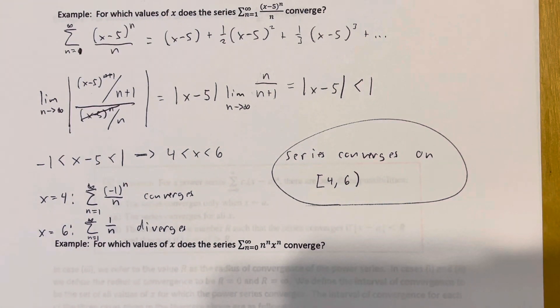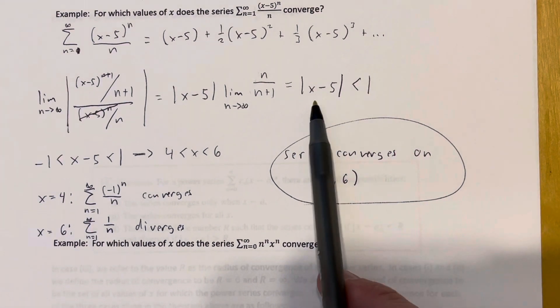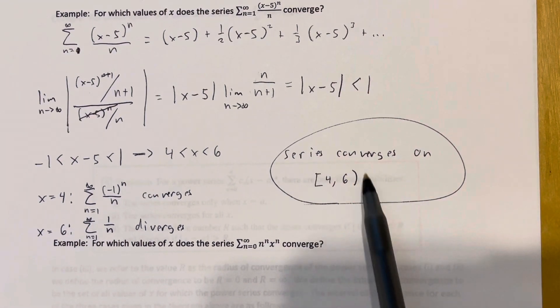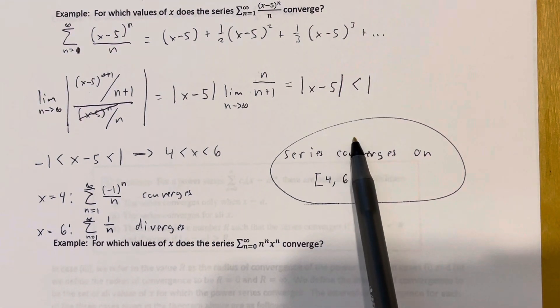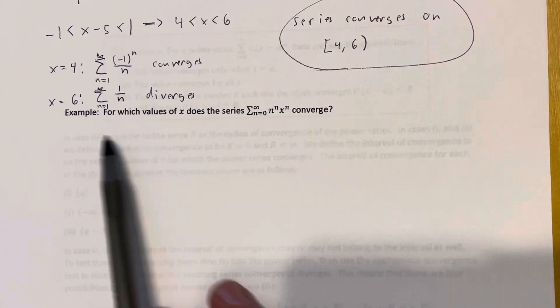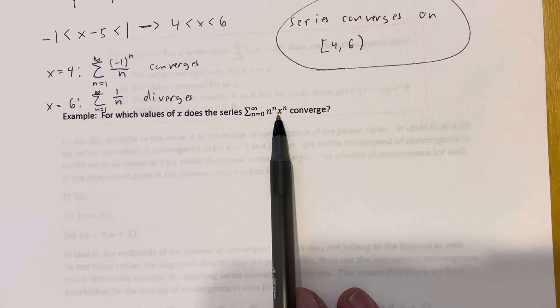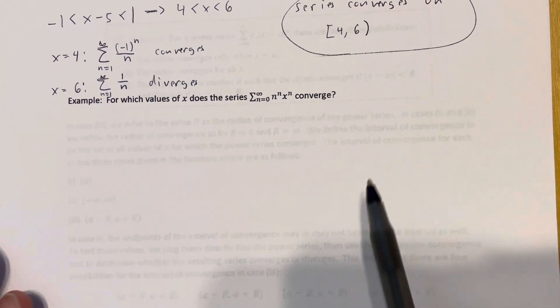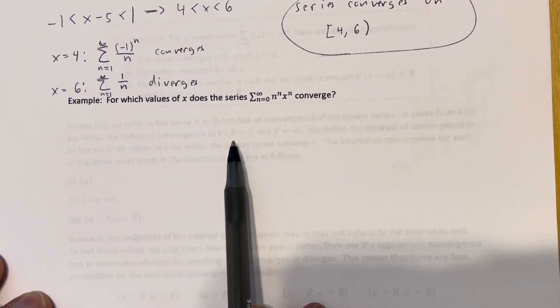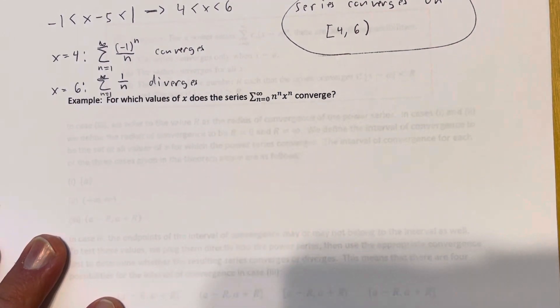The series diverges anywhere outside this interval, because any value of x outside [4, 6) makes the ratio test limit greater than one, which conclusively means divergence. Let's take a look at a different problem: for which values of x does the series with terms n^n times x^n converge? This is a power series centered at zero. Normally we'd use the ratio test, but the root test works a bit better here.